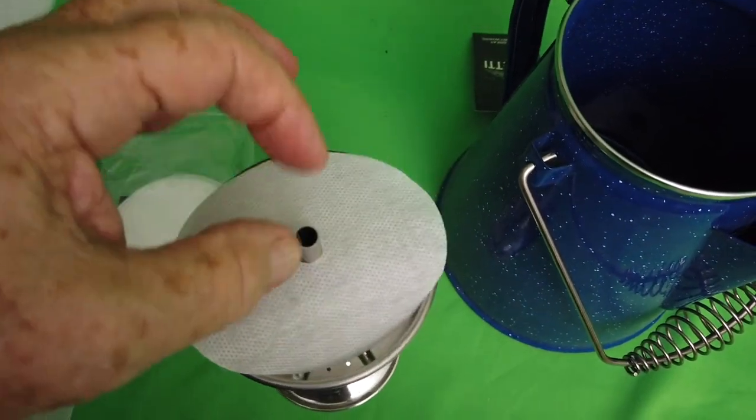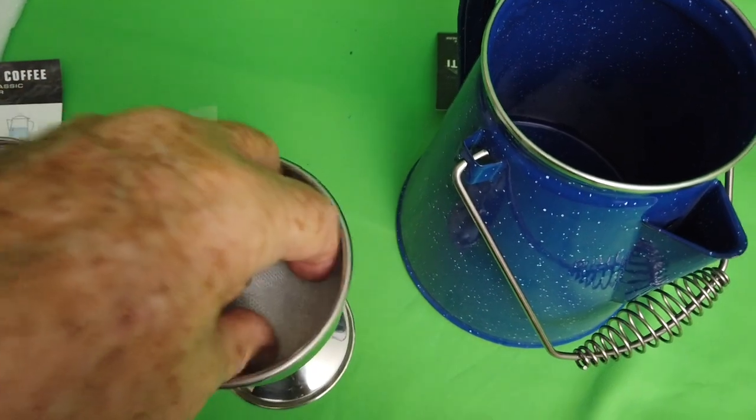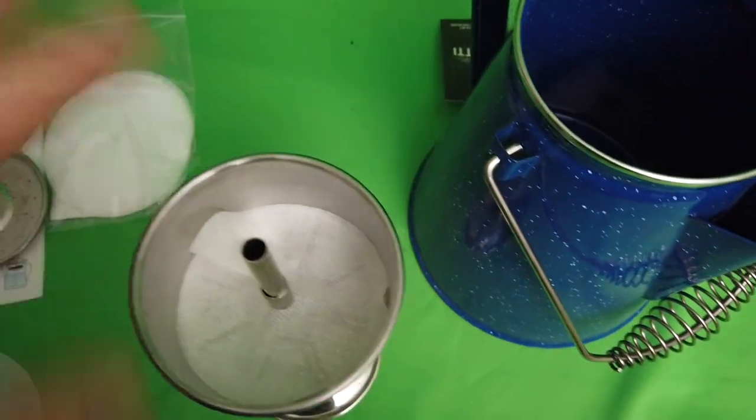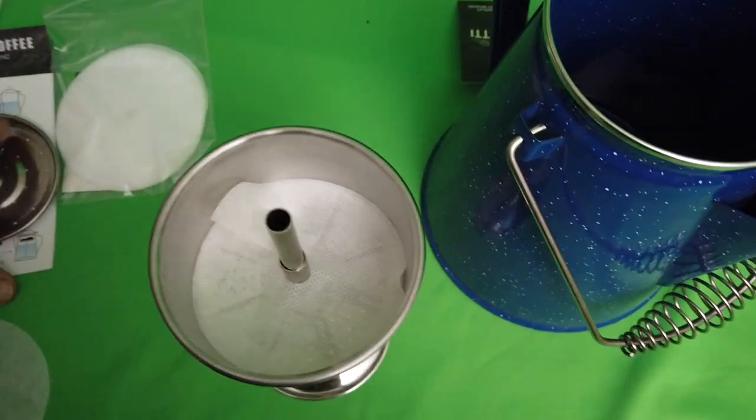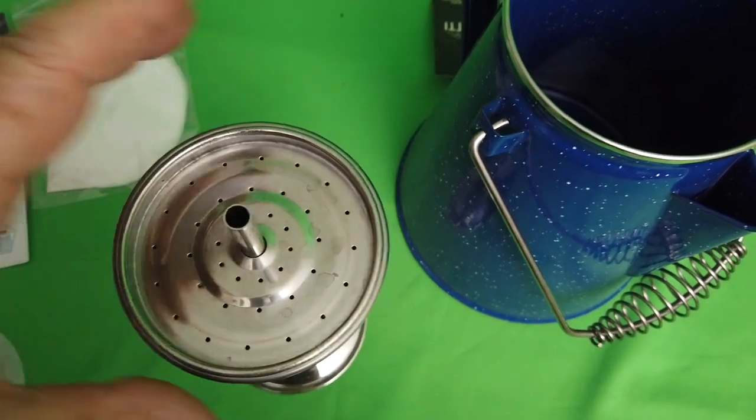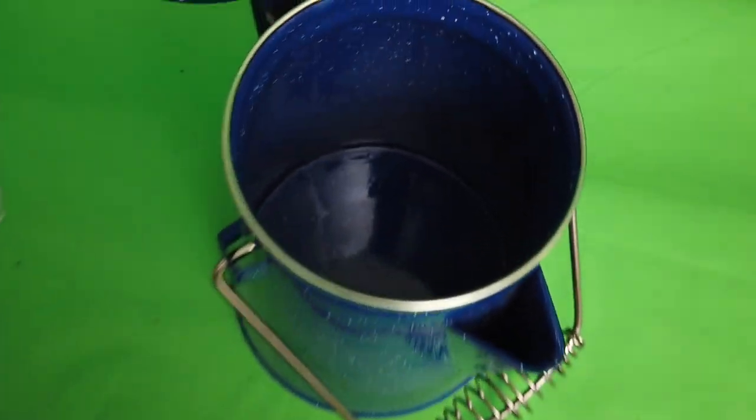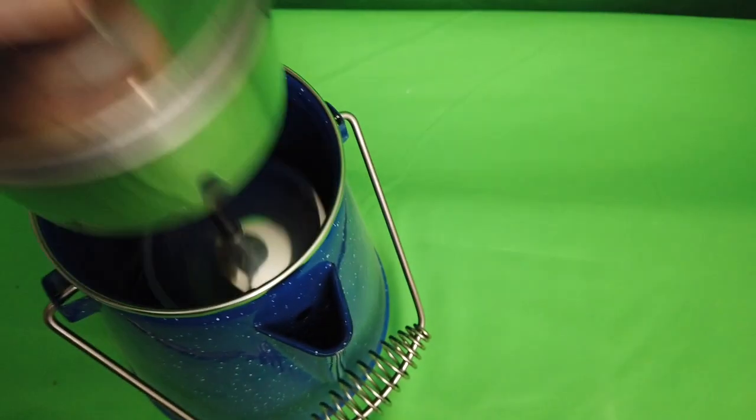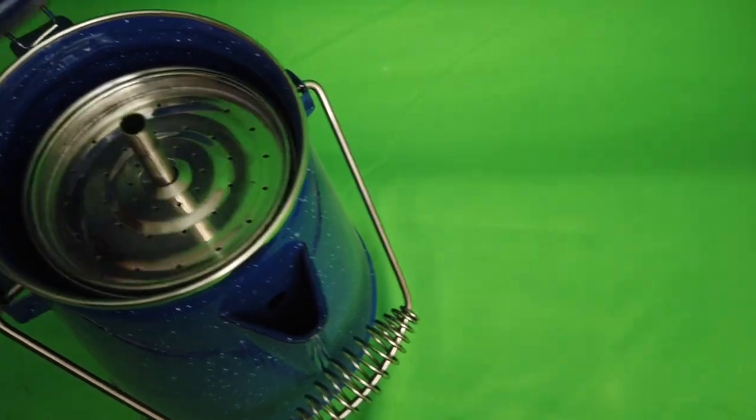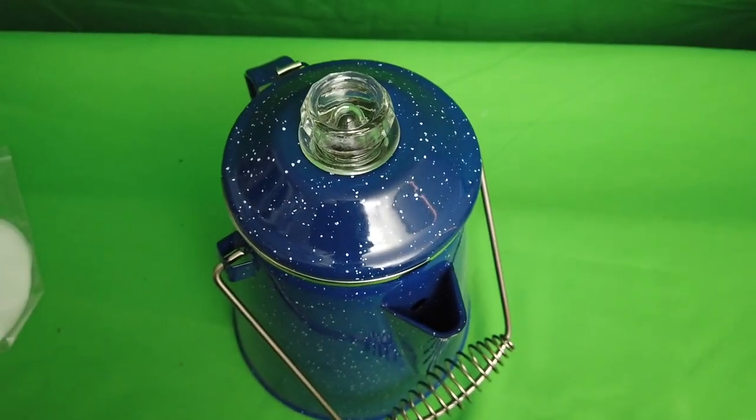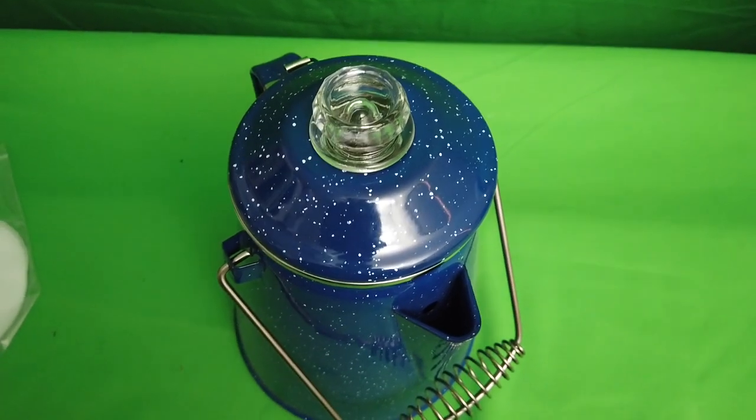Here's the filter that came with it. Put your coffee grinds in here, put the lid on top, and fill it with water. Put it in here and fire it up and let it percolate five to ten minutes depending how strong coffee you want.